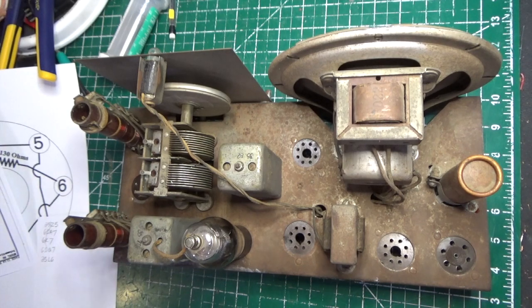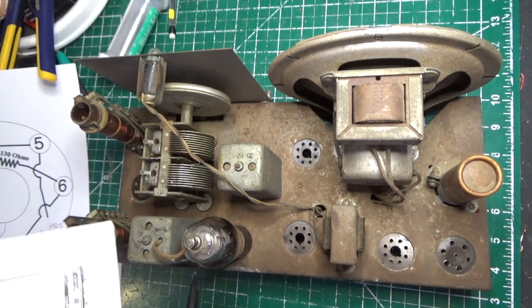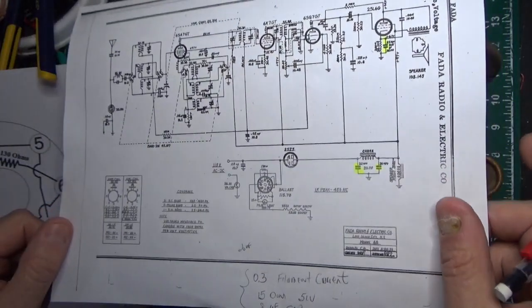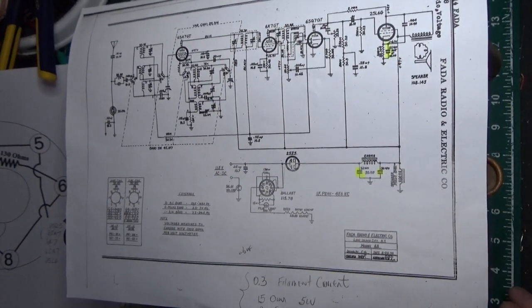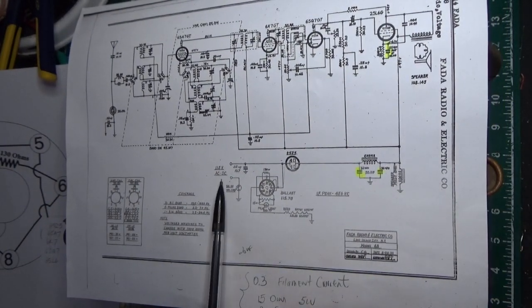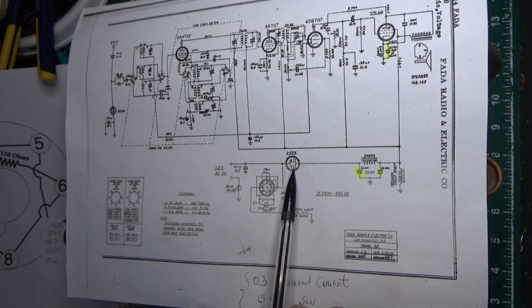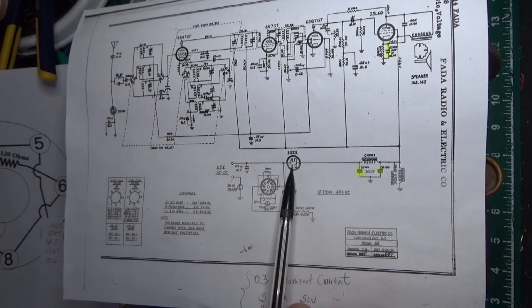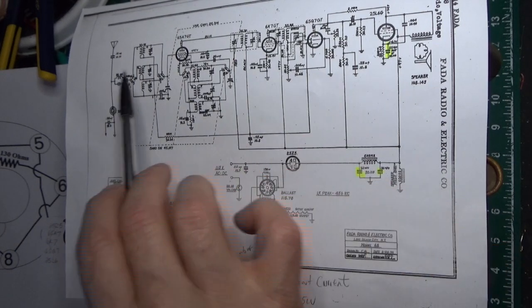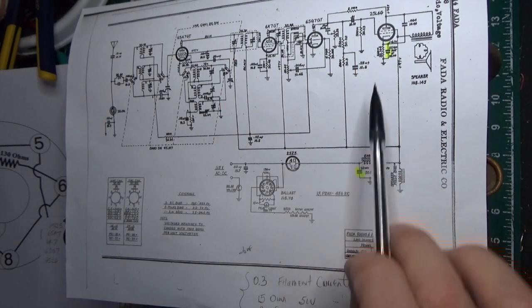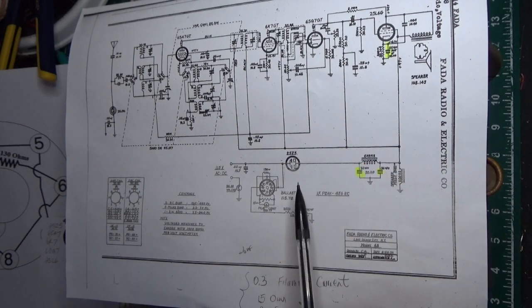The main thing to remember here is that the ballast resistor is all AC—there's no rectification happening at that point. It's simply taking your AC and dropping it down to something else to get rectified. We're bringing it down, putting it into this tube, and it's feeding all the other tubes. 68 volts will go across all five of these tubes and we'll be exactly what we need. That's really all you need to think about from a ballast perspective.